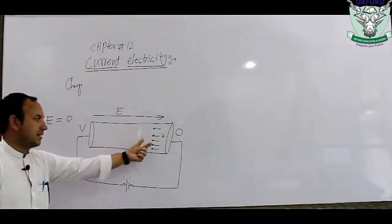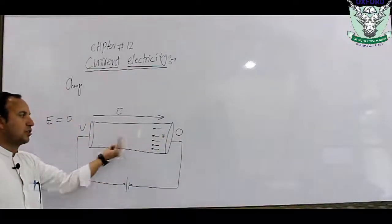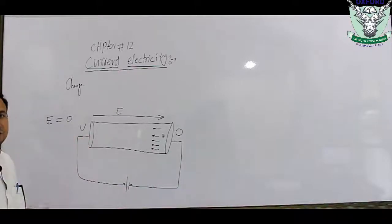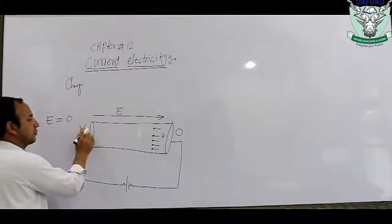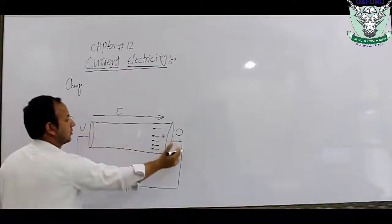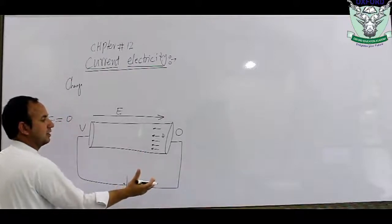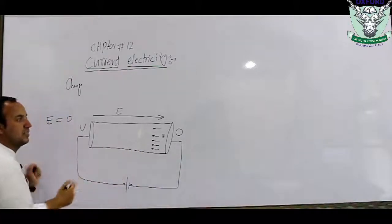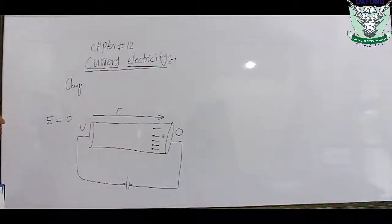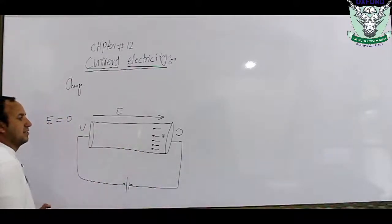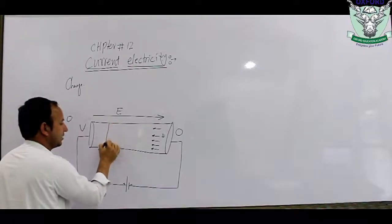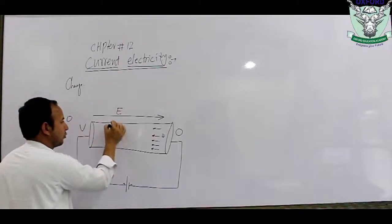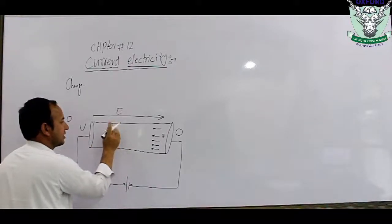When an external electric field is applied to a conductor, it changes the actual motion of the electrons. The electrons are directed from the negative side toward the positive side, producing current flow through the cross-sectional area.